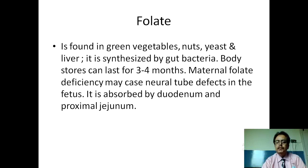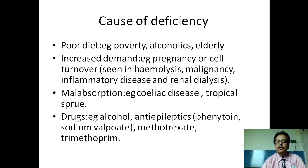Folate is found in green vegetables, nuts, yeast, and liver. It is also synthesized by gut bacteria and body stores last for three to four months, so deficiency occurs relatively early. Maternal folate deficiency may cause neural tube defects in the fetus. It is absorbed by the duodenum and proximal jejunum. Etiology of deficiency includes poor diet due to poverty, alcohol, elderly people, increased demand states like pregnancy and hematological malignancies. Also inflammatory diseases and renal dialysis — in dialysis, the dialysate binds folate causing deficiency.